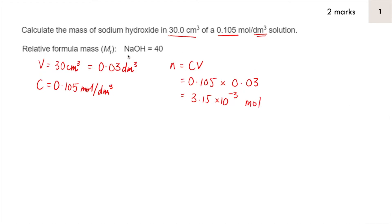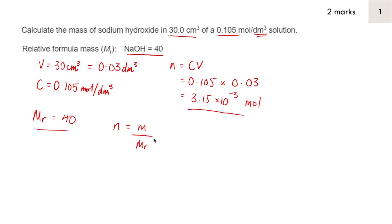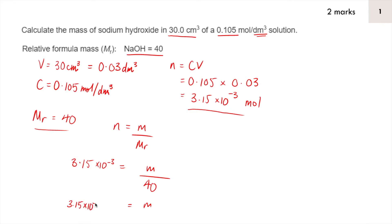We've been given the MR of sodium hydroxide, which is 40. The formula involving number of moles and MR is: N equals mass divided by MR. I'm going to use this to work out the mass of sodium hydroxide. Substituting in: N is 3.15 × 10⁻³ and MR is 40, so mass equals 3.15 × 10⁻³ times 40, which comes out as 0.126 grams.